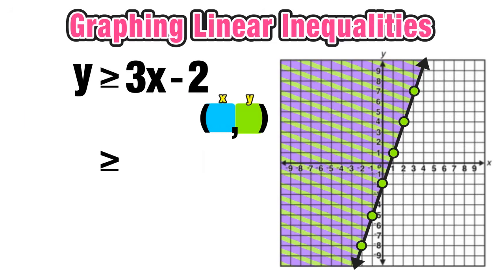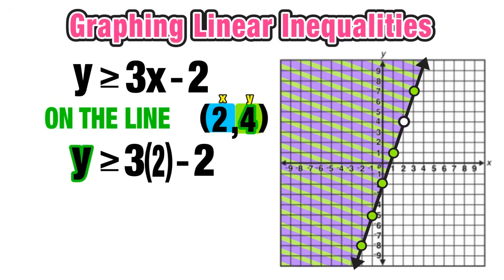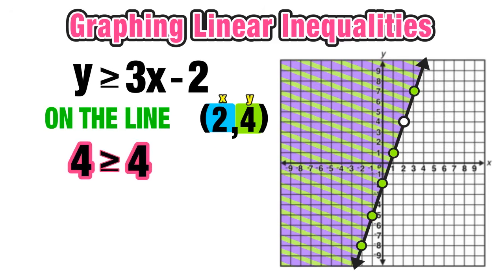Next, a point on the line: (2, 4). Substituting x = 2 and y = 4: 3 times 2 equals 6, and 6 minus 2 equals 4. We get 4 ≥ 4, which is true. This explains why any point on the line is also included in the solution set when using a greater than or equal to symbol.